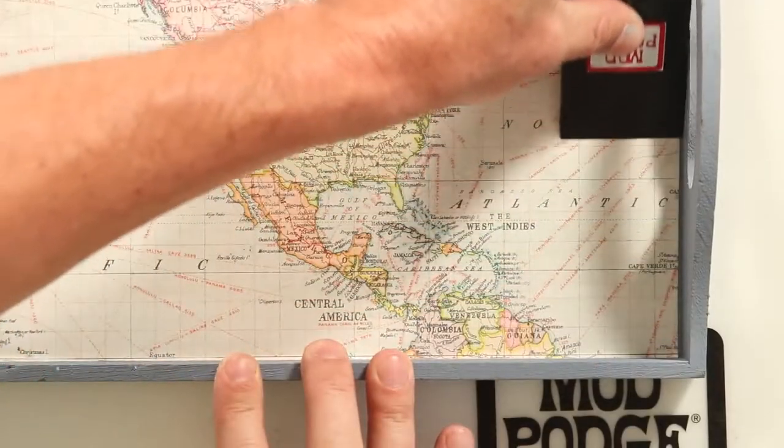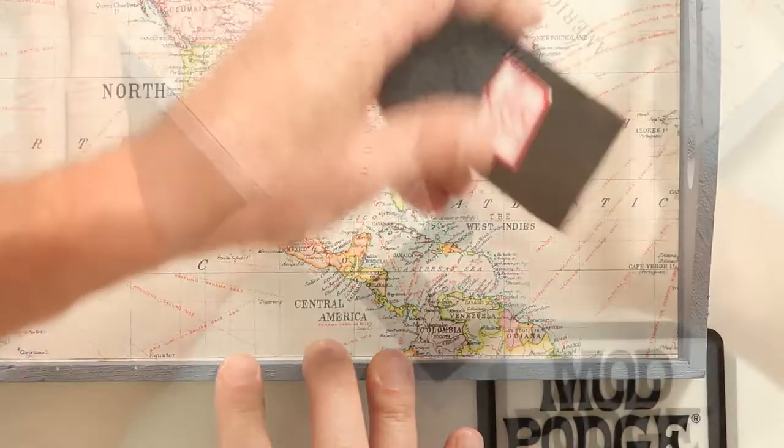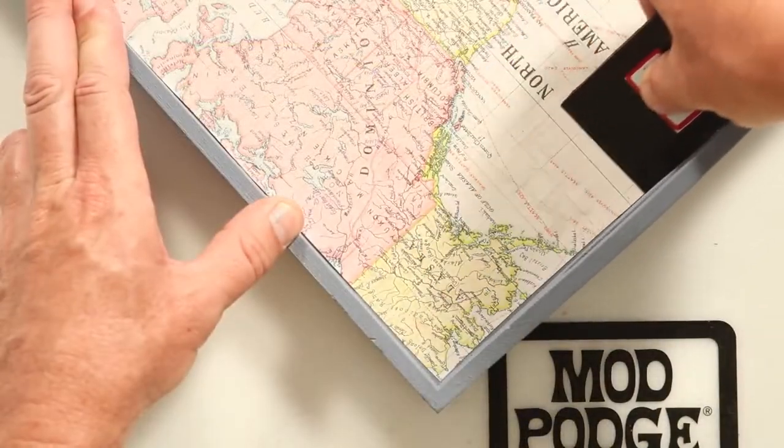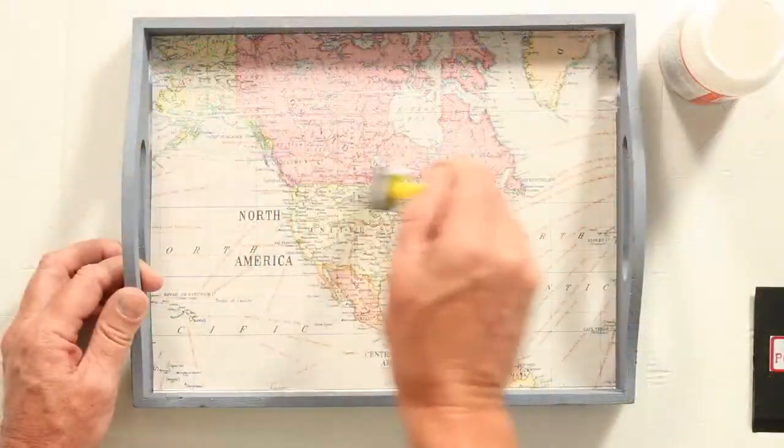The squeegee is perfect for corners. It smooths paper and fabrics. You can also use the foam brushes for top coating.